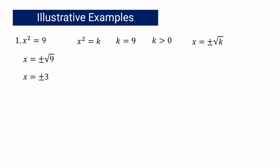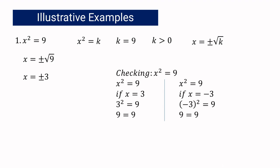We can always check if our answer is correct by substituting the values into the original equation. If the equation is x squared equals 9 and x equals 3, then 3 squared equals 9. In the same manner, if x equals negative 3, then negative 3 times negative 3 is also equal to 9.